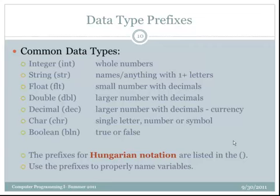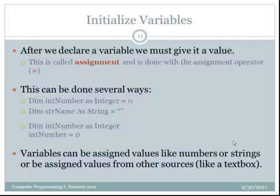Boolean, prefix is BLN. And again, that's going to be a variable that is going to have a one or zero, true or false, yes or no type of answer. Now, all of these prefixes that we've been learning are called Hungarian notation. And those are the prefixes that we use to properly name our variables in both Visual Basic as well as other programming languages.